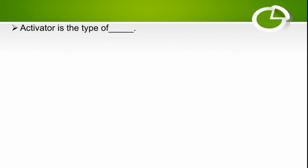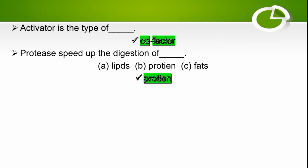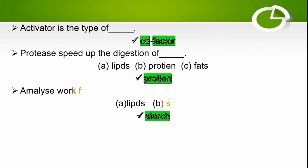Activated is a type of co-factor. Protease is a special enzyme that speeds up the digestion of protein — the right option is protein. Amylase is also a type of enzyme that works for digestion of starch — the right option is starch.